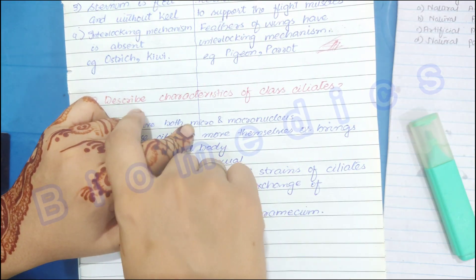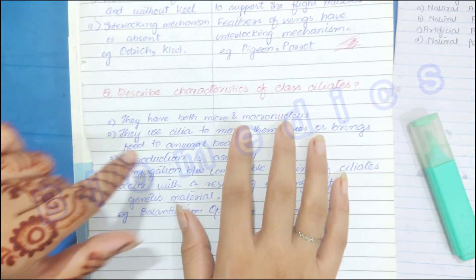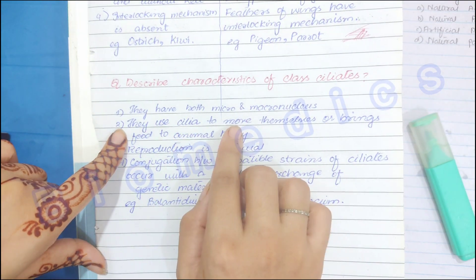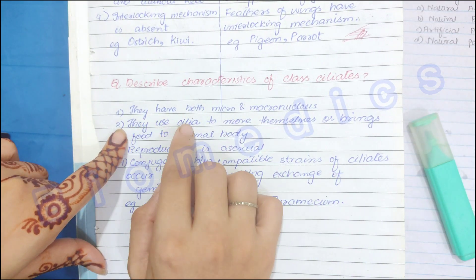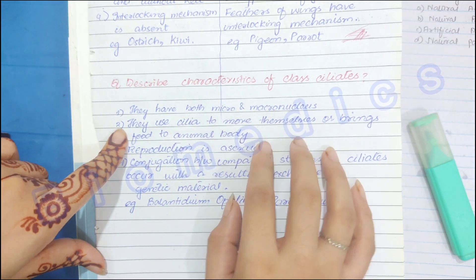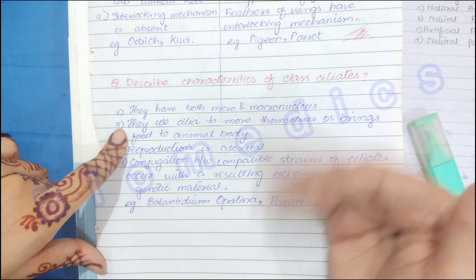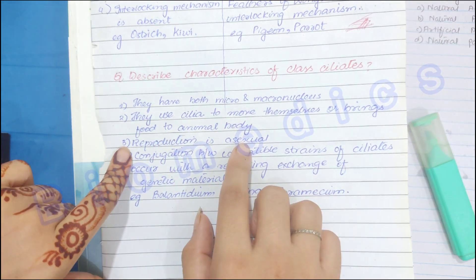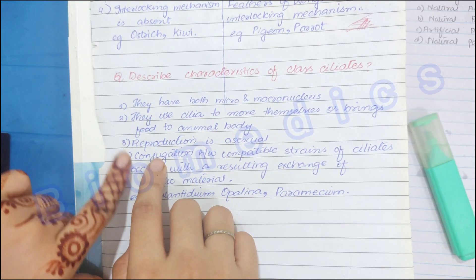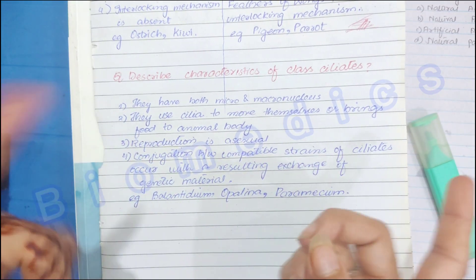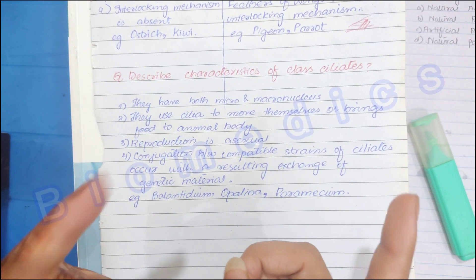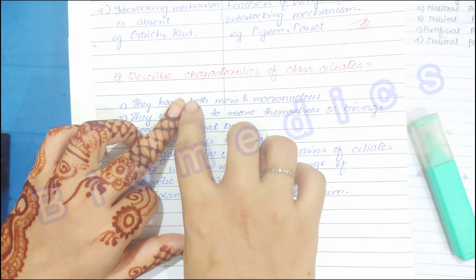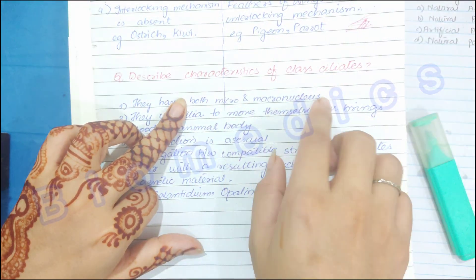Ciliates use cilia for movement and feeding. Reproduction is asexual, and conjugation also occurs — a process involving the exchange of genetic material between two individuals.